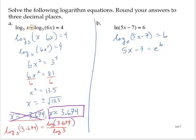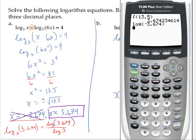Continuing to solve for x, let me add 7 to both sides. So then 5x is equal to e to the sixth plus 7. And then I'll divide by 5. So then x is equal to e to the sixth plus 7 divided by 5. And it does ask for us to round the answers to three decimal places.